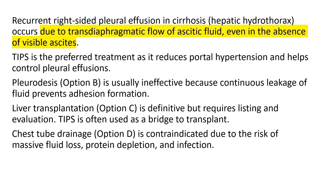Recurrent right-side pleural effusion in cirrhosis patients basically occurs due to transdiaphragmatic flow of ascitic fluid, and this can occur even in the absence of visible ascites. TIPS reduces portal hypertension and controls these effusions. Pleurodesis is not effective because there will be continuous leakage of fluids preventing adhesion formation. Liver transplantation is definitive but requires listing and evaluation. Chest tube is actually contraindicated due to the risk of massive fluid loss, protein depletion, and infection.